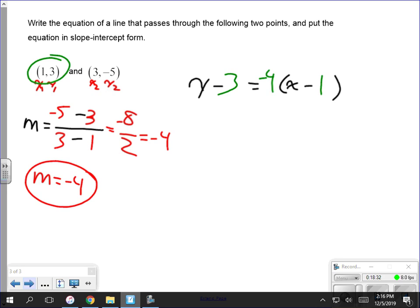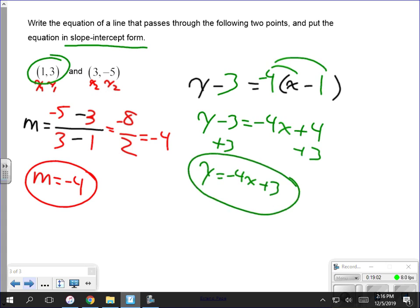Now I have an equation. However, it wants it in slope intercept form, so I need to get y by itself. Two steps. Distribute the 4. Y minus 3 equals negative 4x plus 4. Negative 4 times negative 1 is positive 4. Add 3 to both sides. Y equals negative 4x plus 7.